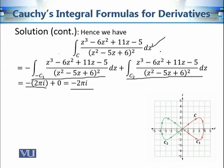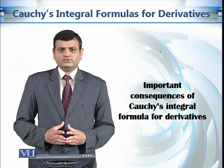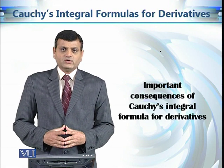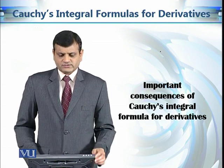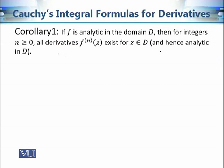Apart from simplification of contour integrals, there are some very important consequences of Cauchy's integral formula for derivatives. The first important consequence is that if a function is analytic in a domain D, then for integers n ≥ 0, the nth derivative of this function is also analytic. In other words, if a function is analytic in a domain D, then all its derivatives are also analytic.